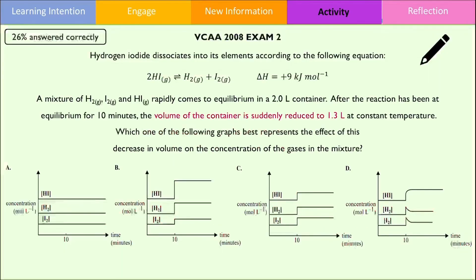In this multiple choice question, the volume of the container has been reduced. We can automatically cancel option A because decreasing the volume should increase the concentration of all gaseous substances, which was not shown. Furthermore, there is the same number of molecules on either side of the equation, hence there should be no change in equilibrium and no net reaction, so we can also eliminate option D. From options B and C, the correct answer is option B because the sudden spike in concentration should be more significant for substances that originally had higher concentrations.